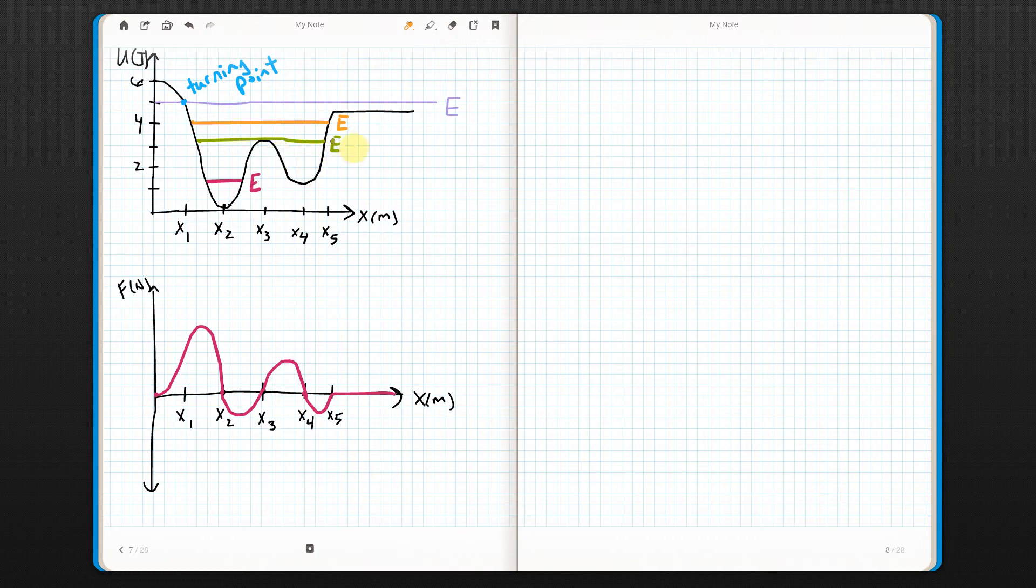Now let's look at this green line. We have turning points again, here and here. But we've also got this funny little, it's just touching this hump. I want you to think about what you'd have here.